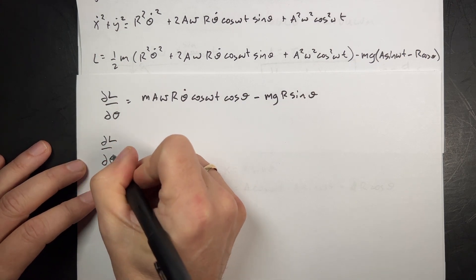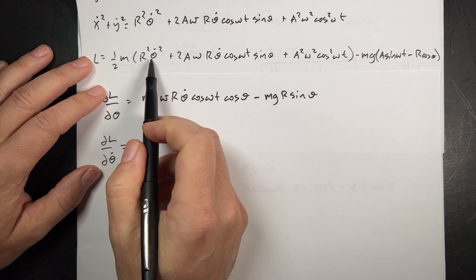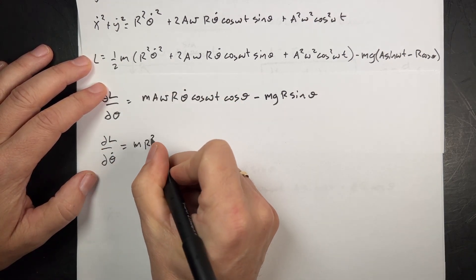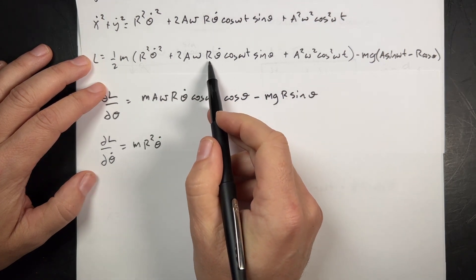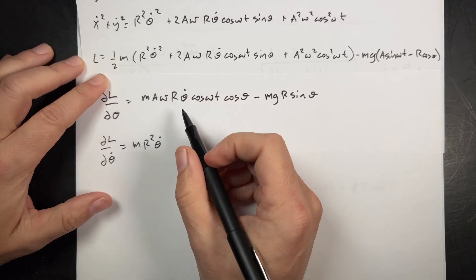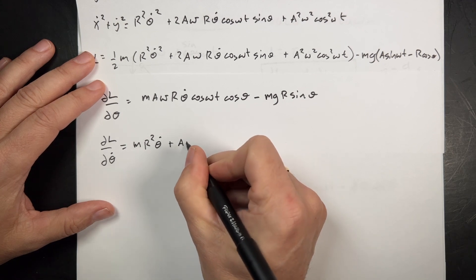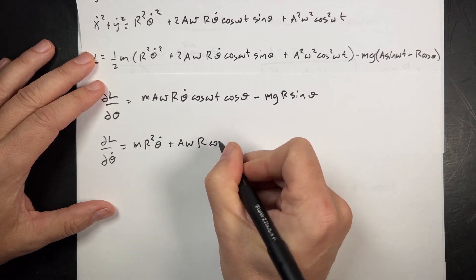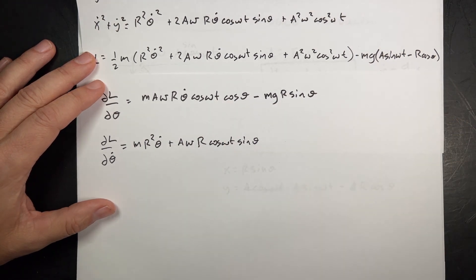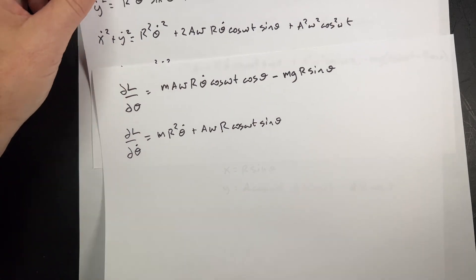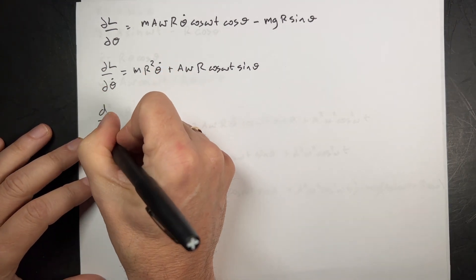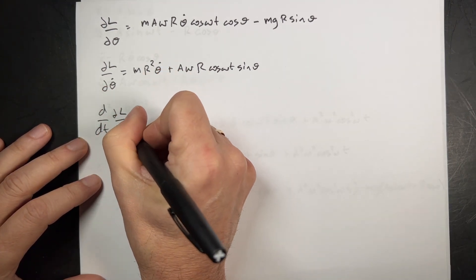Now I take the partial of L with respect to theta-dot. Here's the theta-dot in the first term — bringing down the 2 by the power rule gives m r squared theta-dot. The cross term is linear in theta-dot, so the two's cancel with the one-half m, giving plus a omega r cosine omega t sine theta. There are no other theta-dots, so I'm done.